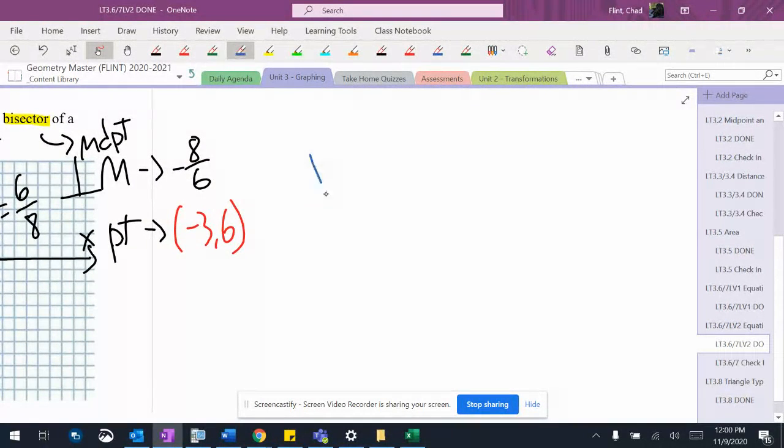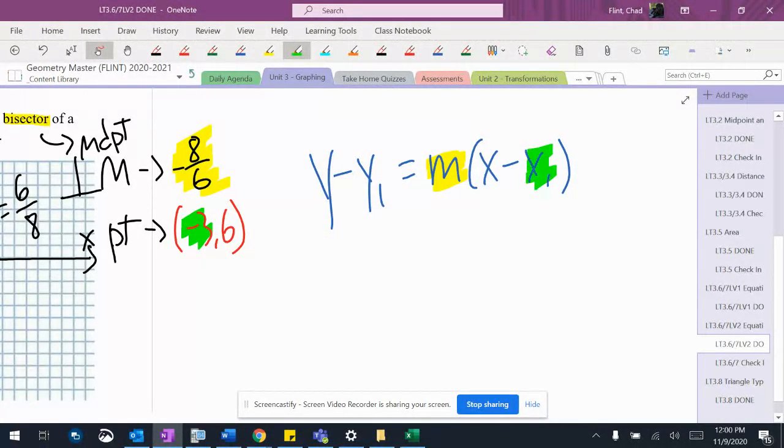And then what that does is I can now go ahead and write my slope point form. I can figure out where everything goes, so negative eight over six goes here, negative three goes here, and then six goes there.